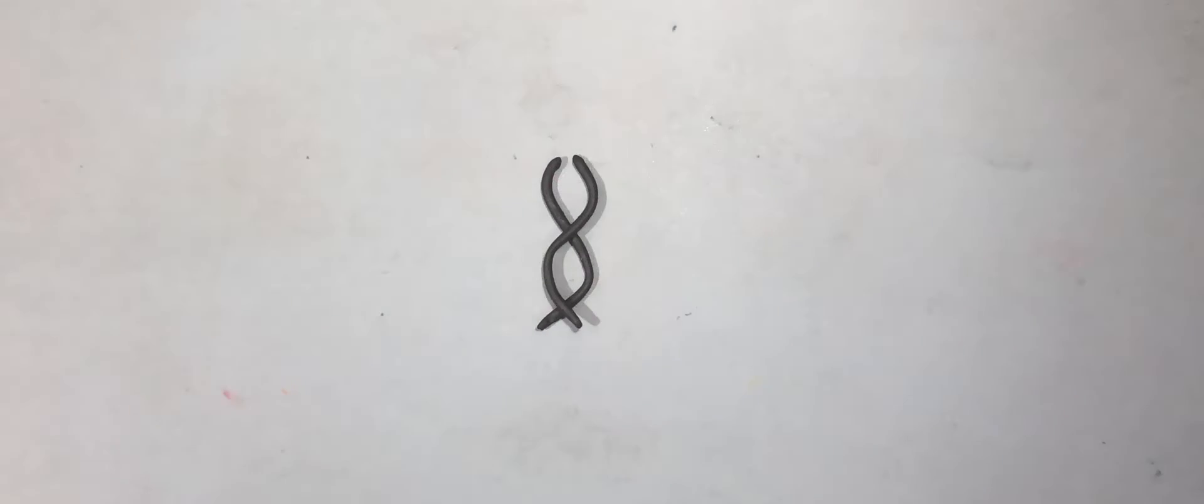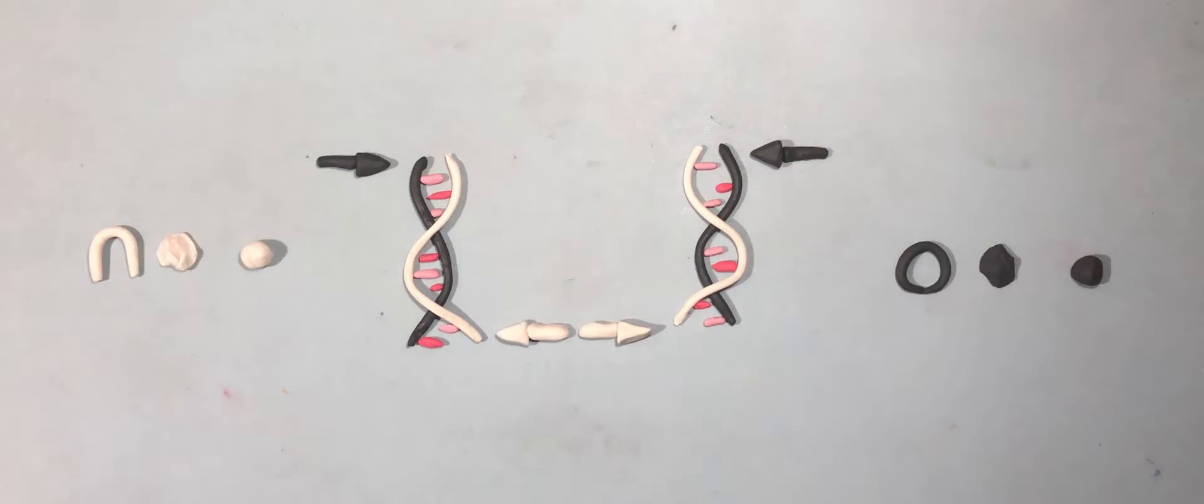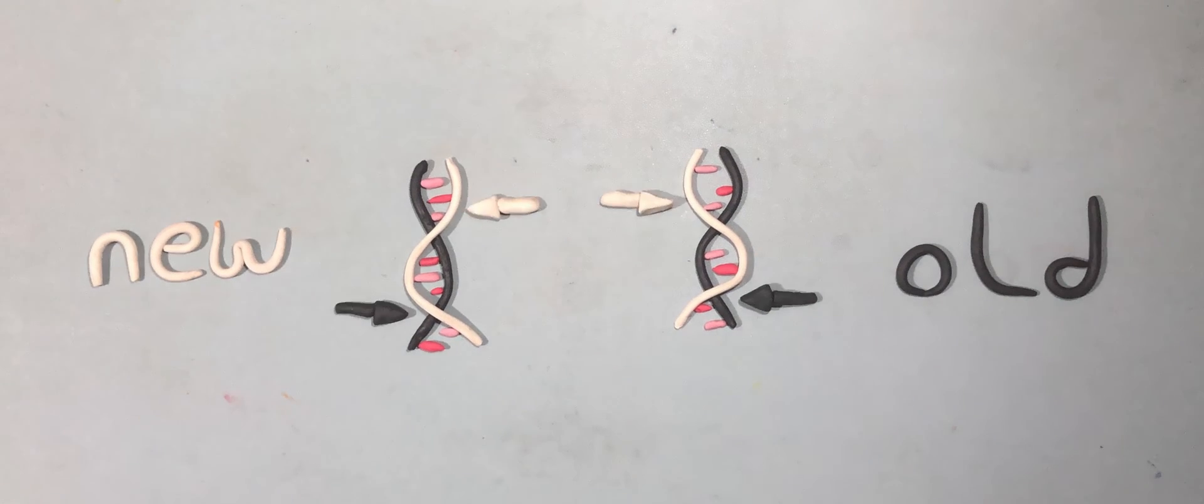DNA replication is the process through which two identical DNA molecules are produced from a single double-stranded DNA molecule. Each molecule is made up of one strand from the original molecule and one new strand.